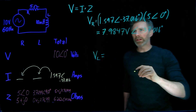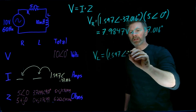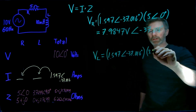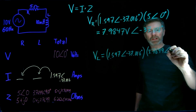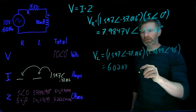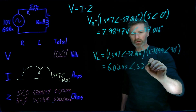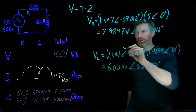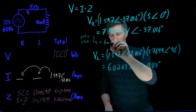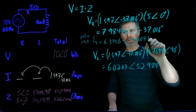And the final calculation: the voltage across the inductor. I times the impedance — same current because we're dealing with a series circuit: 1.597 amps with a phase angle of negative 37.016 degrees, multiplied by the impedance of the inductor, which is 3.7699 with a phase angle of 90 degrees. Multiplying out the magnitudes gives 6.0203 volts, with a phase angle of negative 37.016 plus 90 degrees, which gives 52.984 degrees. We can also do the conversion from polar to rectangular and get 6.3756 minus J4.8071 volts.